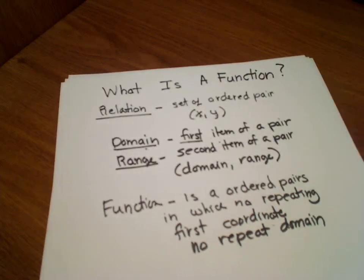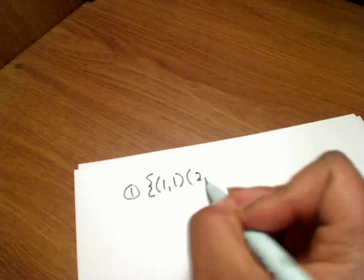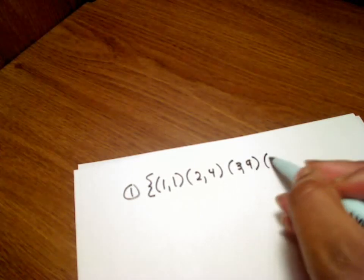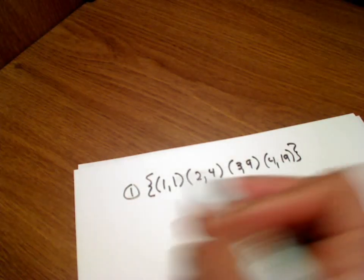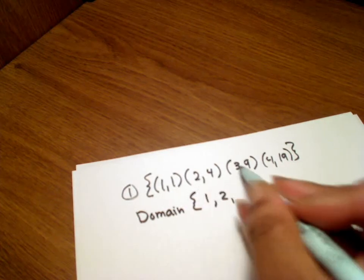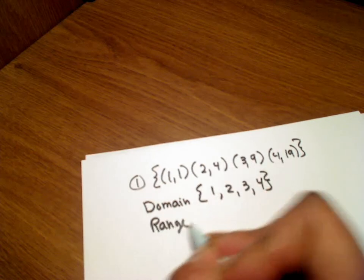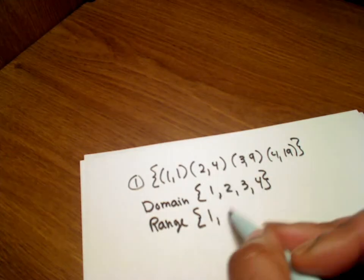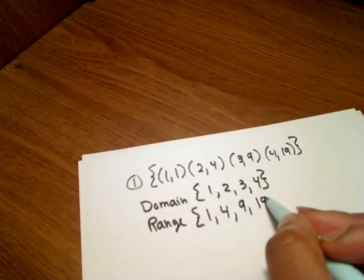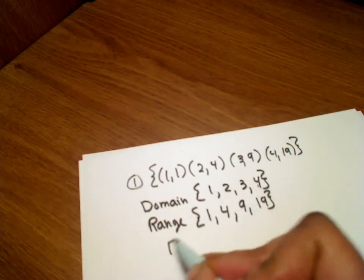Now let's look at a few examples to determine if a set is a function. The first set we're going to look at has domains of one, two, three, and four, and a range of one, four, nine, and nineteen. Is this a function? Yes, it is, because notice there are no repeating domains. So this is a function.